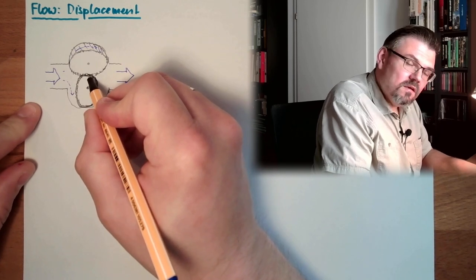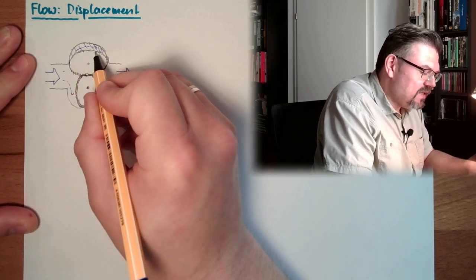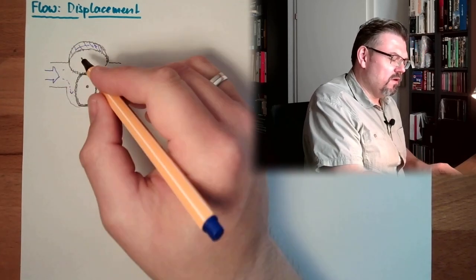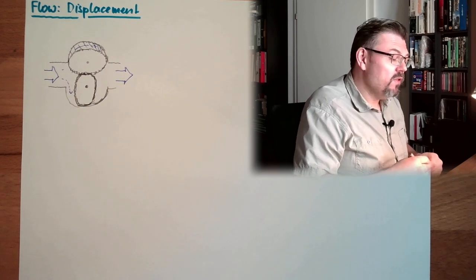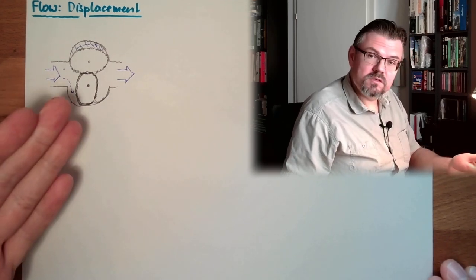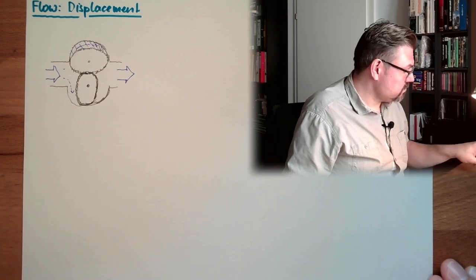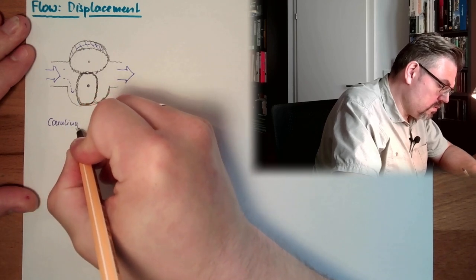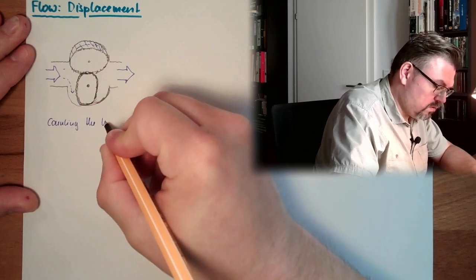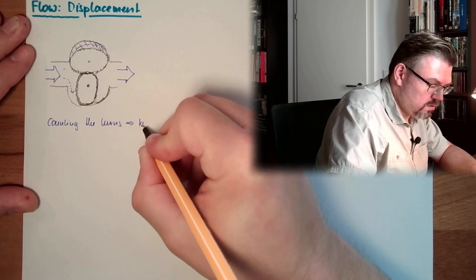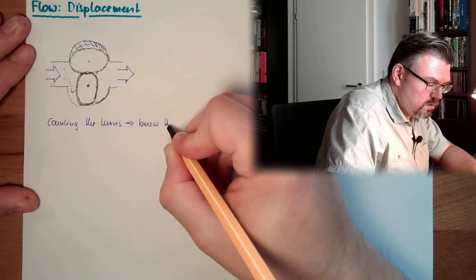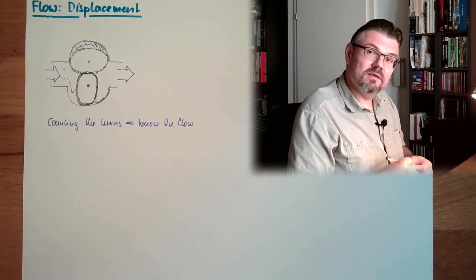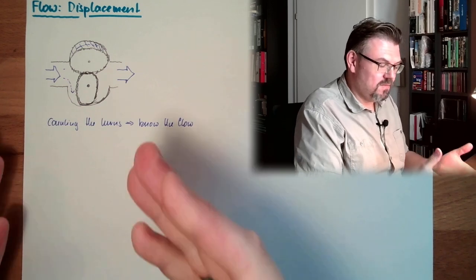Here we are sealed. Here we are sealed, and we are always passing this amount of liquid. With every turn, we are passing this amount of liquid on the upper side and on the lower side, and so we only have to count the turns. So counting the turns, we know the flow. We exactly know how much volume has passed. It's easy, right?